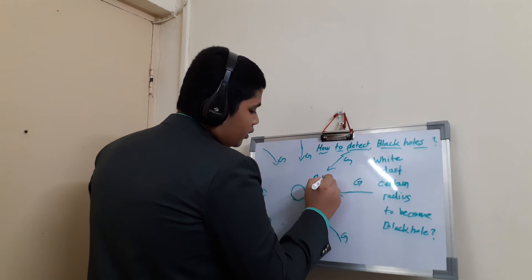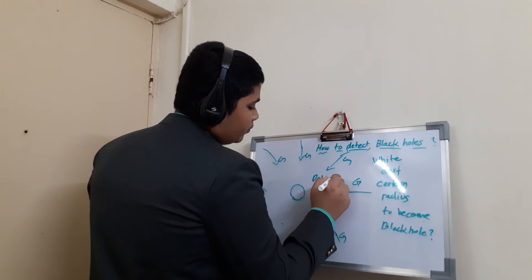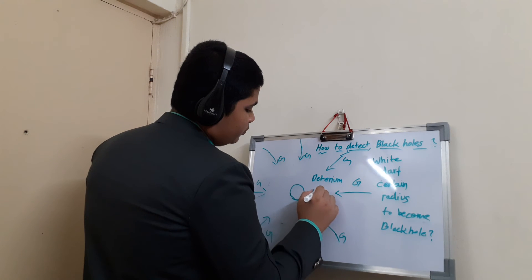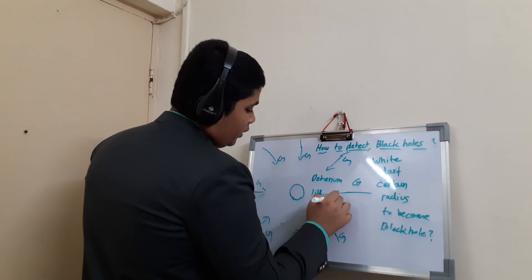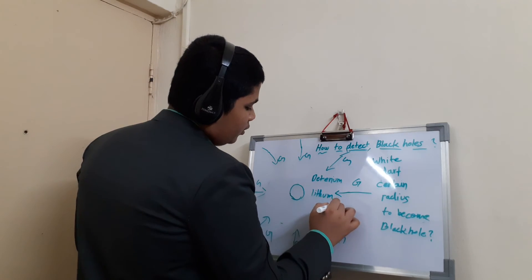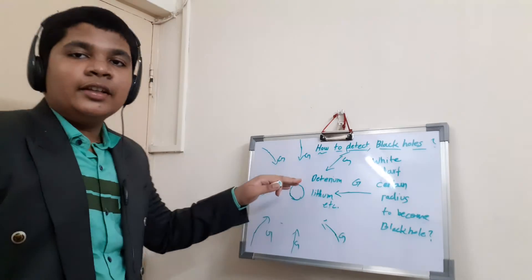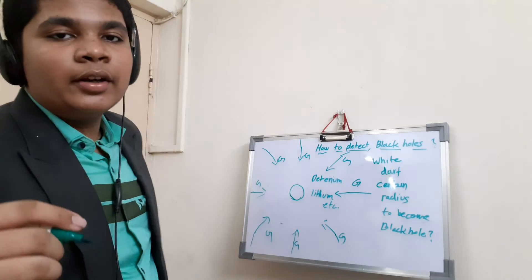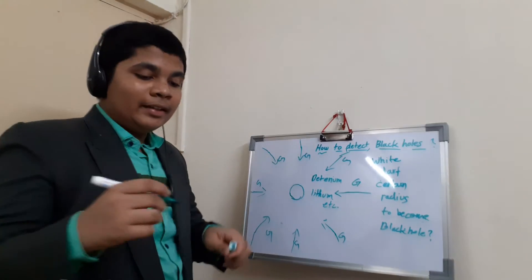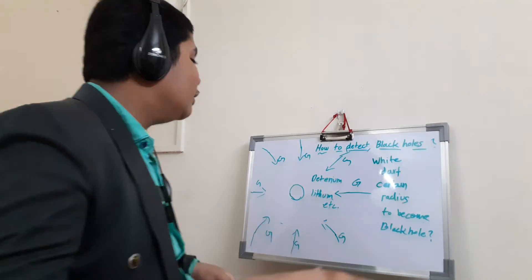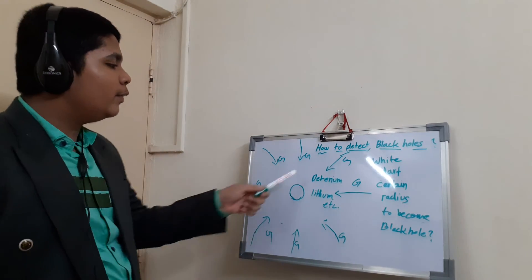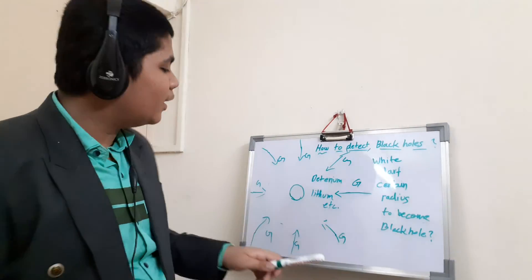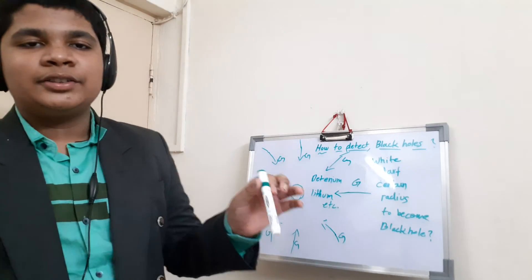Because of the heavier elements — such as deuterium, lithium, and so on — the core becomes intensely heavy. That is why black holes are so heavy inside. So now we have also understood how to detect black holes, and I have also told you about Schwarzschild radius.